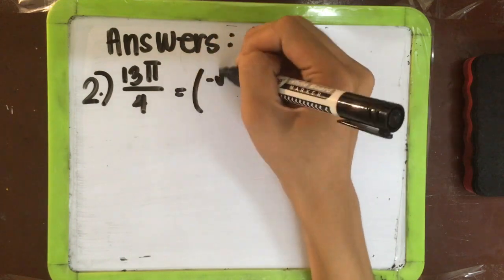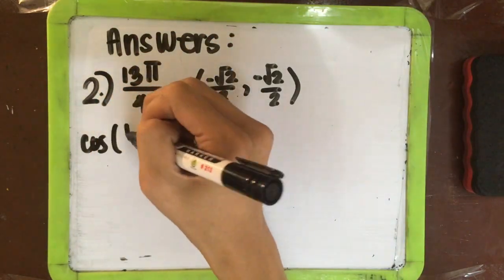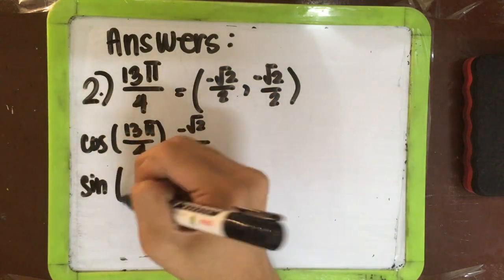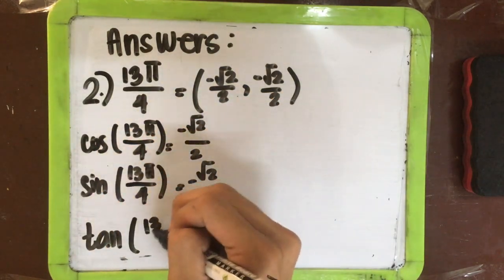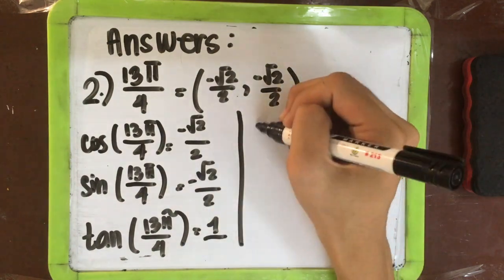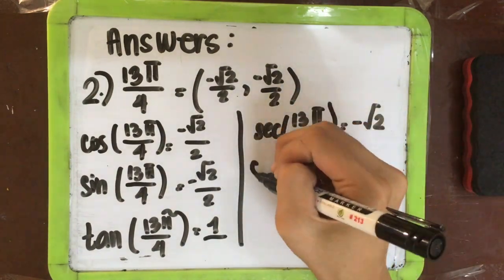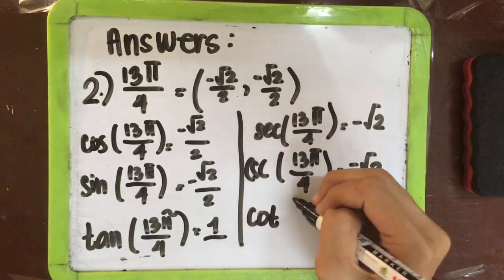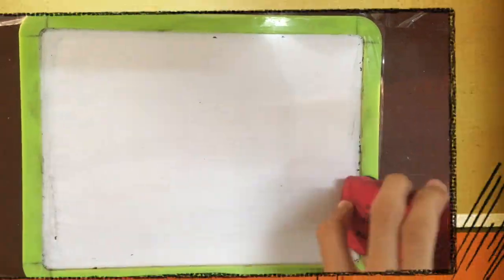For number 2, 13π over 4, its coordinates are (−√2/2, −√2/2). Cosine equals −√2 over 2, sine equals −√2 over 2, tangent equals 1, secant equals −√2, cosecant equals −√2, and cotangent equals 1.